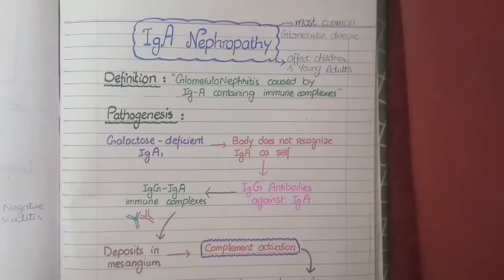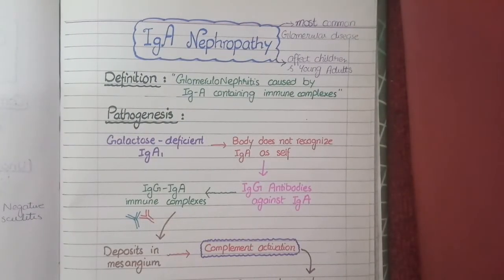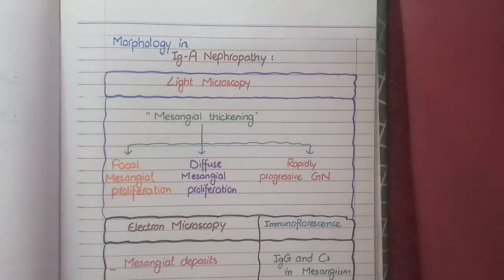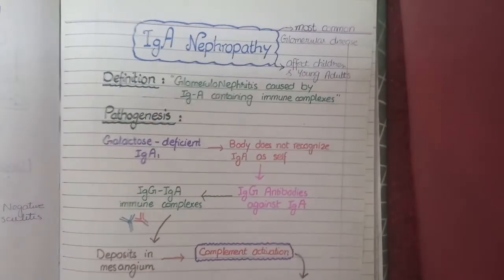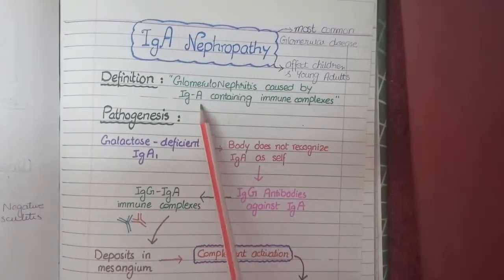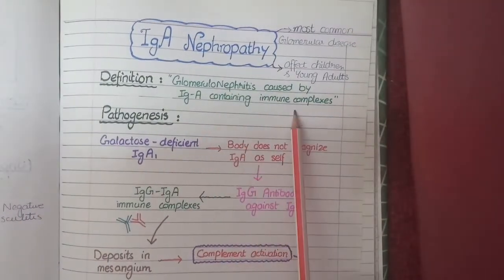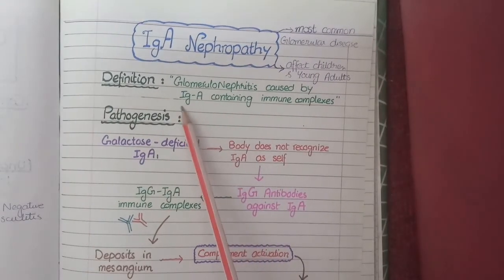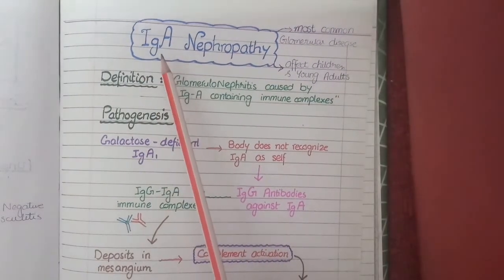In this video we will discuss the pathology of IgA nephropathy. We will first study its definition and pathogenesis, and then its morphology in detail. IgA nephropathy is a type of glomerulonephritis caused by IgA-containing immune complexes — the keyword being IgA, which is why it is called IgA nephropathy.